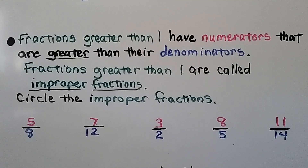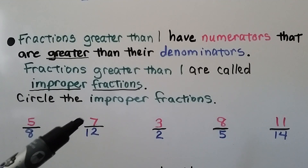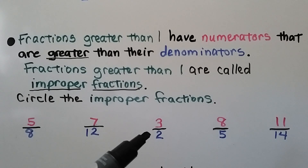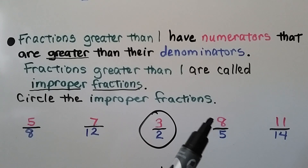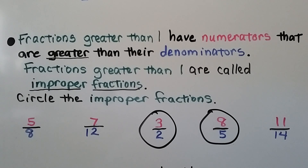Fractions greater than one have numerators that are greater than the denominators, and these are called improper fractions. We need to circle the improper fractions. Five eighths: five is not greater than eight — no. Seven twelfths: seven is not greater than twelve — no. Three halves: the numerator is greater than the denominator — yes, that is an improper fraction. Eight fifths: eight is greater than five — yes, improper fraction. Eleven fourteenths: eleven is not greater than fourteen — no.